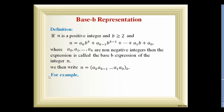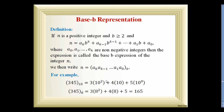We write n = (a_k a_(k−1) … a_1 a_0)_b. For example, 345 in base 10 is 3×10² + 4×10¹ + 5×10⁰. For 345 in base 8, we write 5×8⁰ + 4×8¹ + 3×8², and on simplifying we get the value 229.